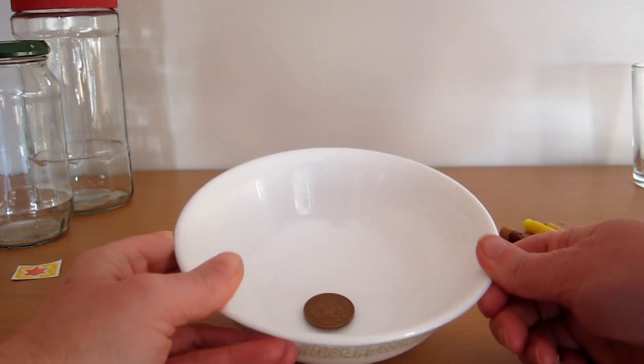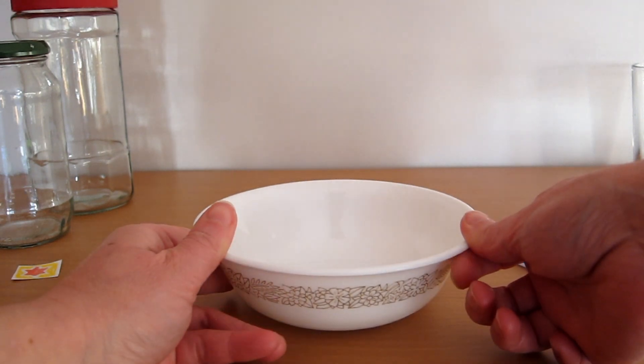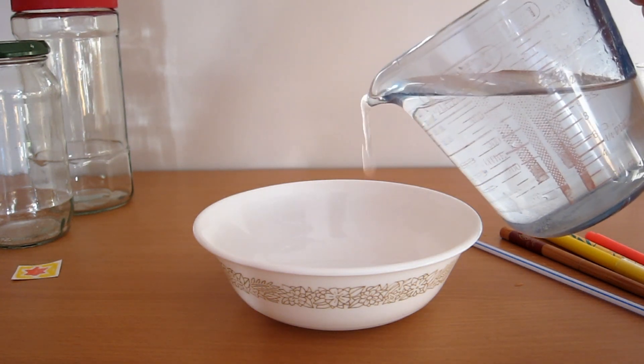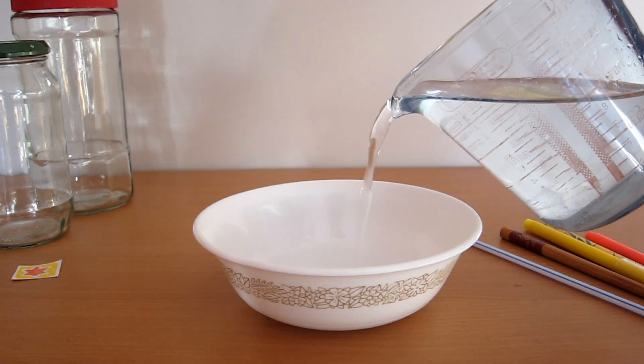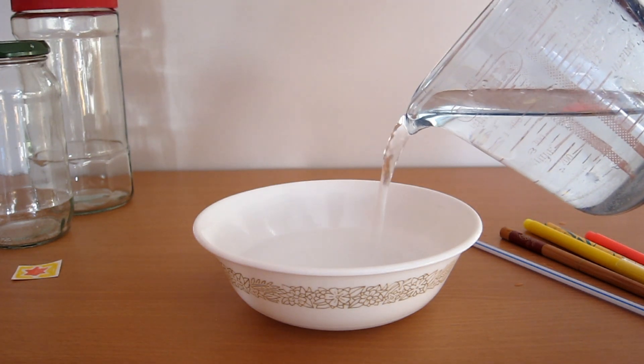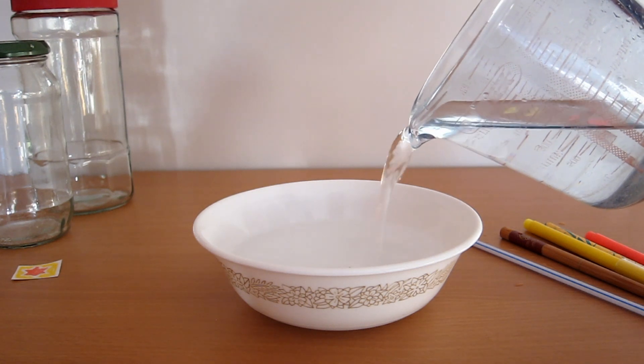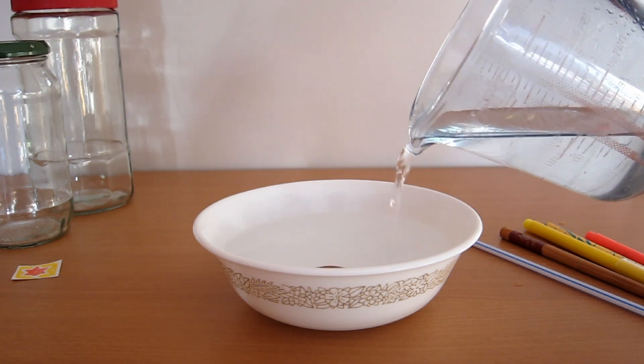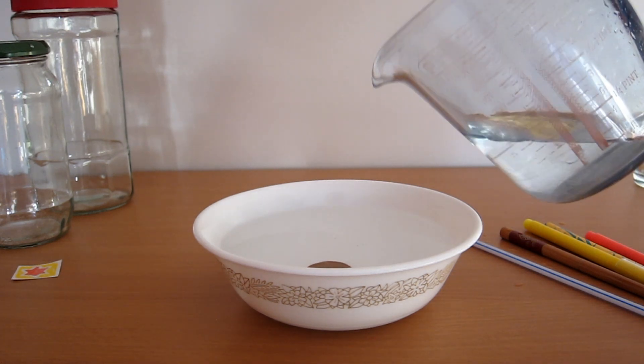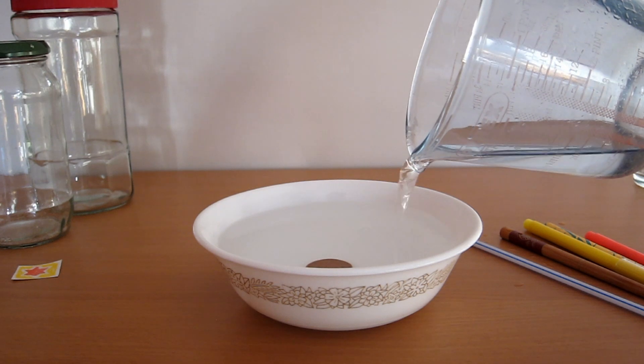Now move the bowl away until you can't see the coin anymore. Get some water and slowly fill the bowl up with water, until you see the coin appear magically.